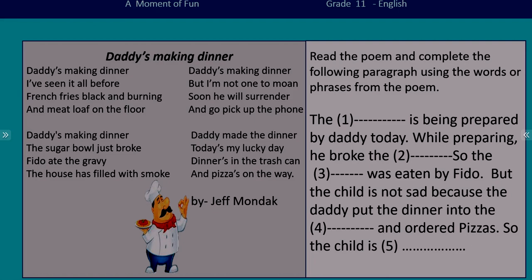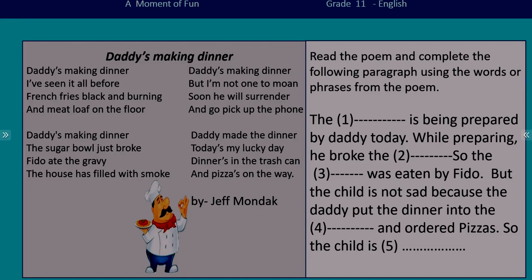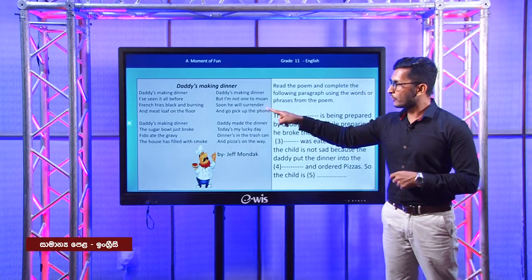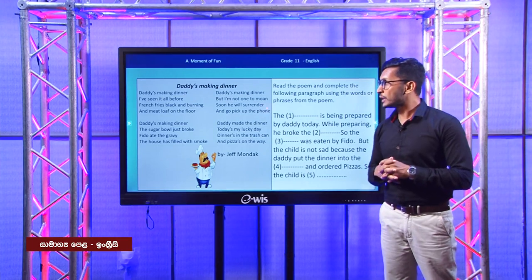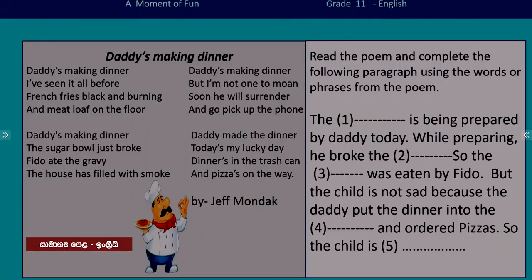Now it is time for you to do the rest of the activity. I hope you have completed all the blanks. Let's see your answers. The dinner is being prepared by Daddy today. While preparing, he broke the sugar bowl. We can find the clue in the poem — the same word 'broke' appears in the second stanza: 'the sugar bowl just broke.' He broke the sugar bowl.